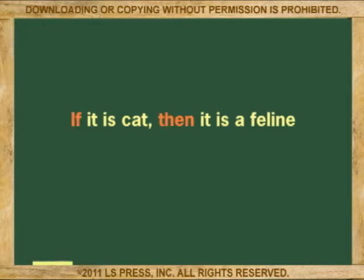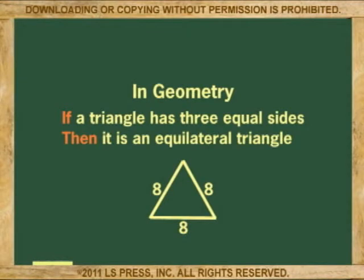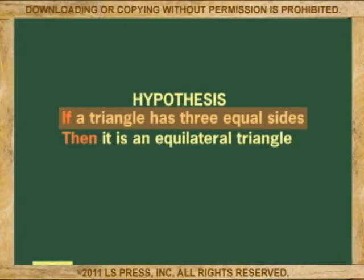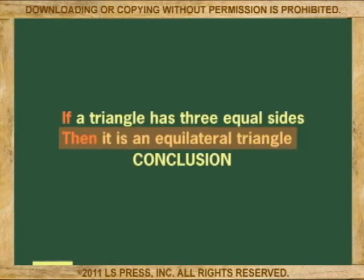The if and then form is used to make the statement as simple as possible. In geometry, we could say: if a triangle has three equal sides, then it is an equilateral triangle. The first part, or the if part, is called the hypothesis. And the second part, the then part, is called the conclusion.